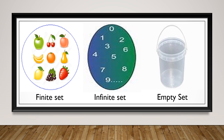So in this finite set there are nine elements: we have apple, cherry, pear, banana, orange, avocado, lemon, grape, and strawberry. We are able to give a specific amount of elements within this set.